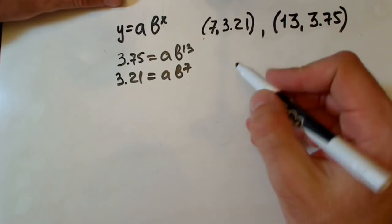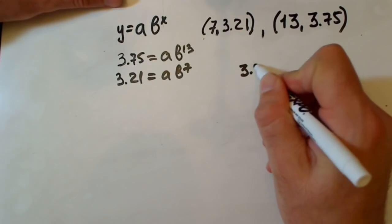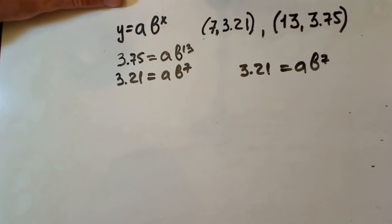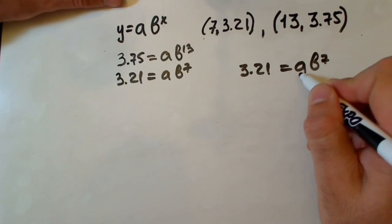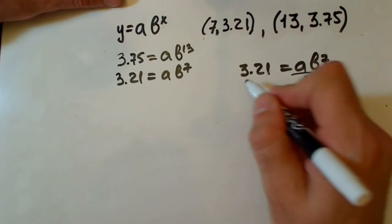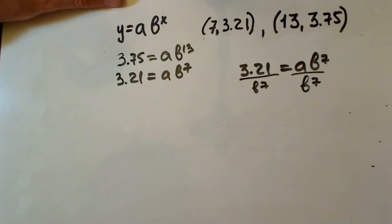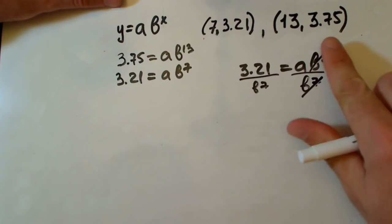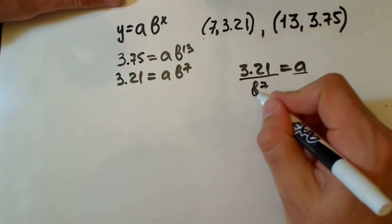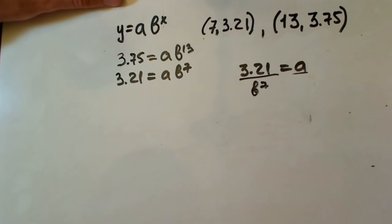Let's take the second equation, which is 3.21 equals ab to the seventh and solve it for a. In order to do this we have to divide by b to the seventh on both sides. This one eliminates and we have a equals 3.21 over b to the seventh.